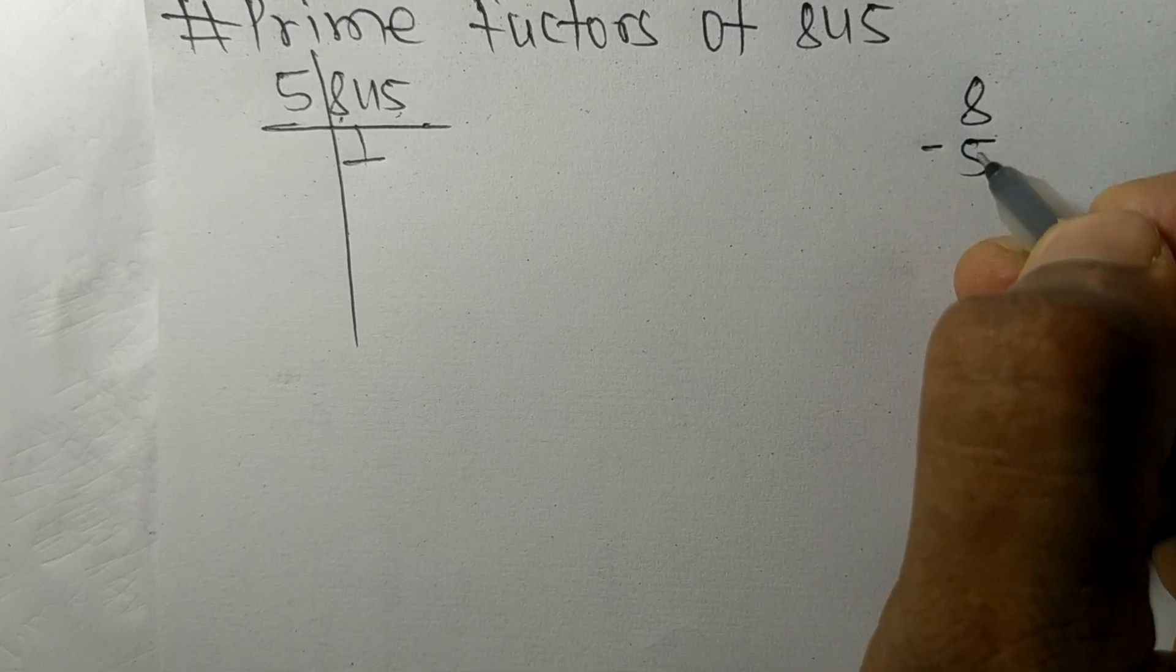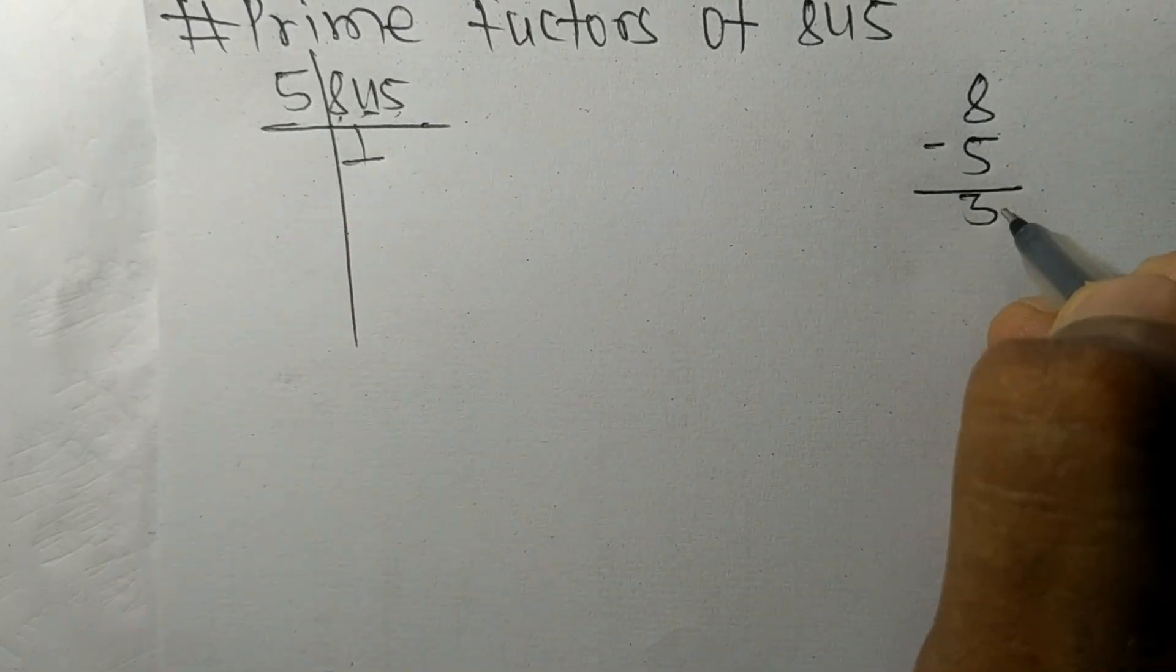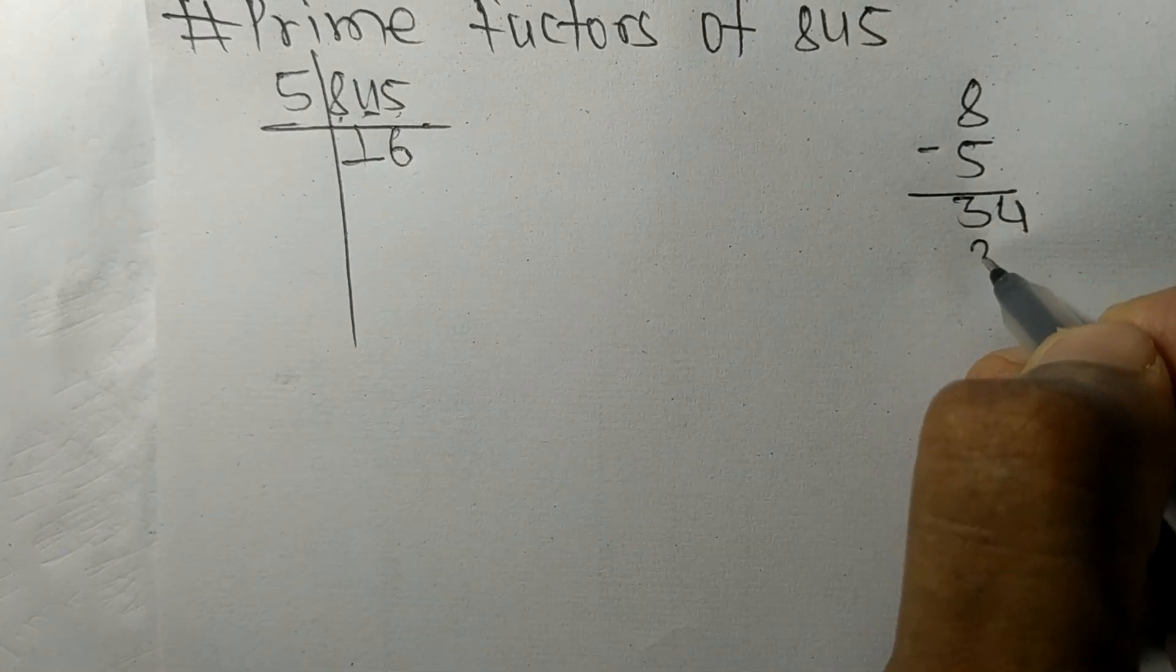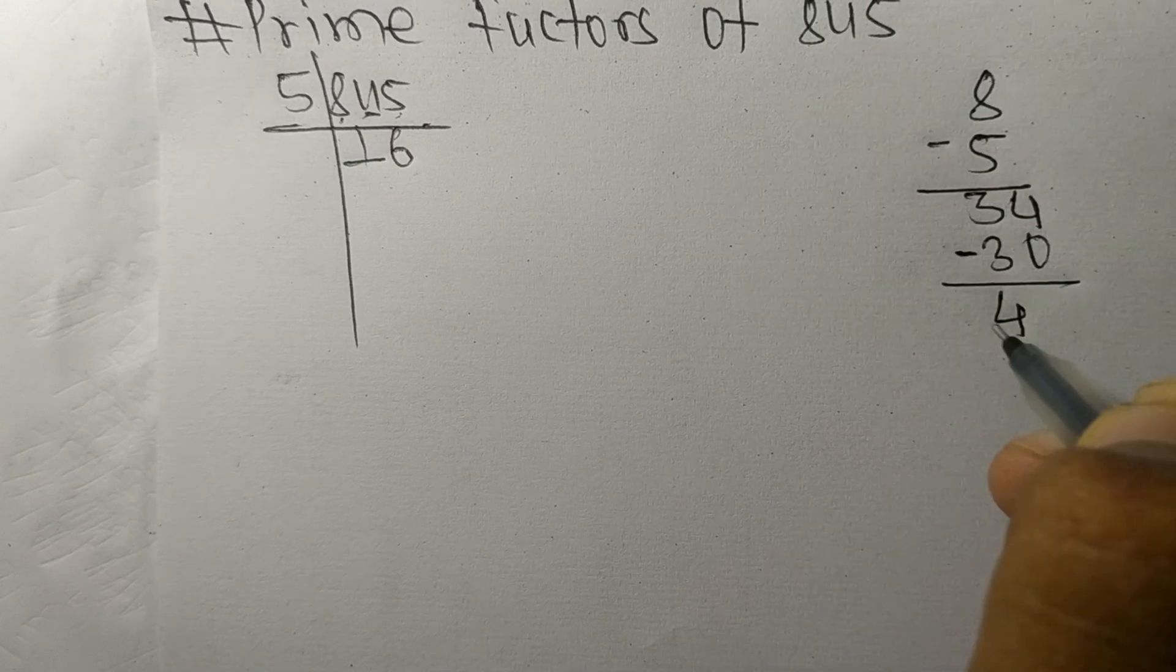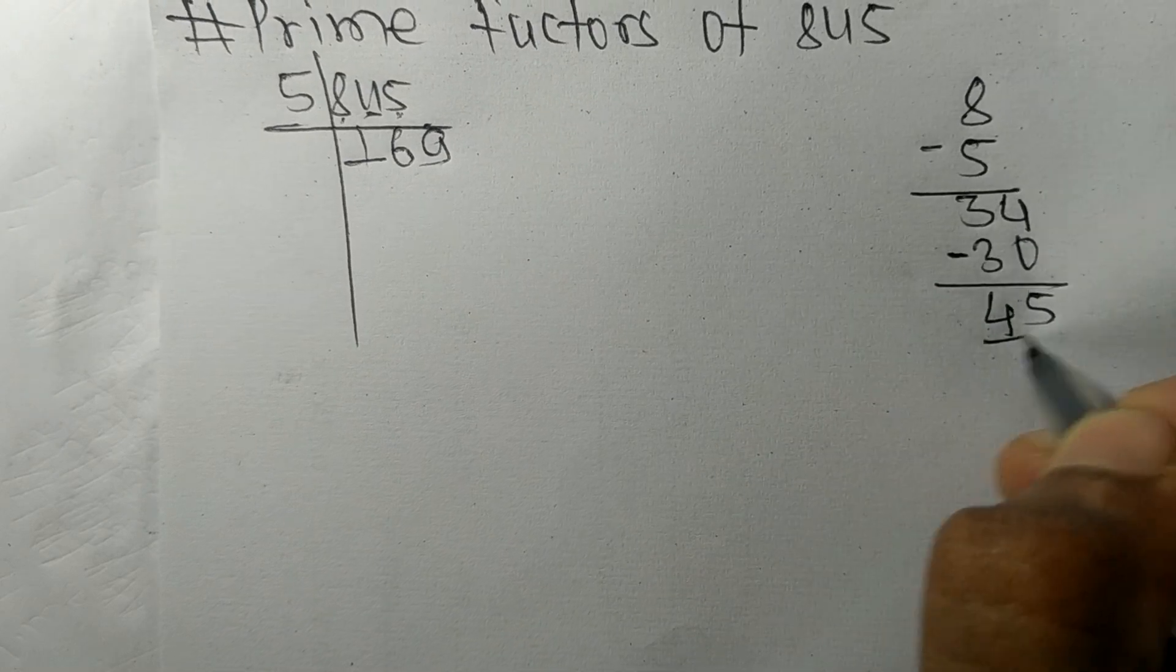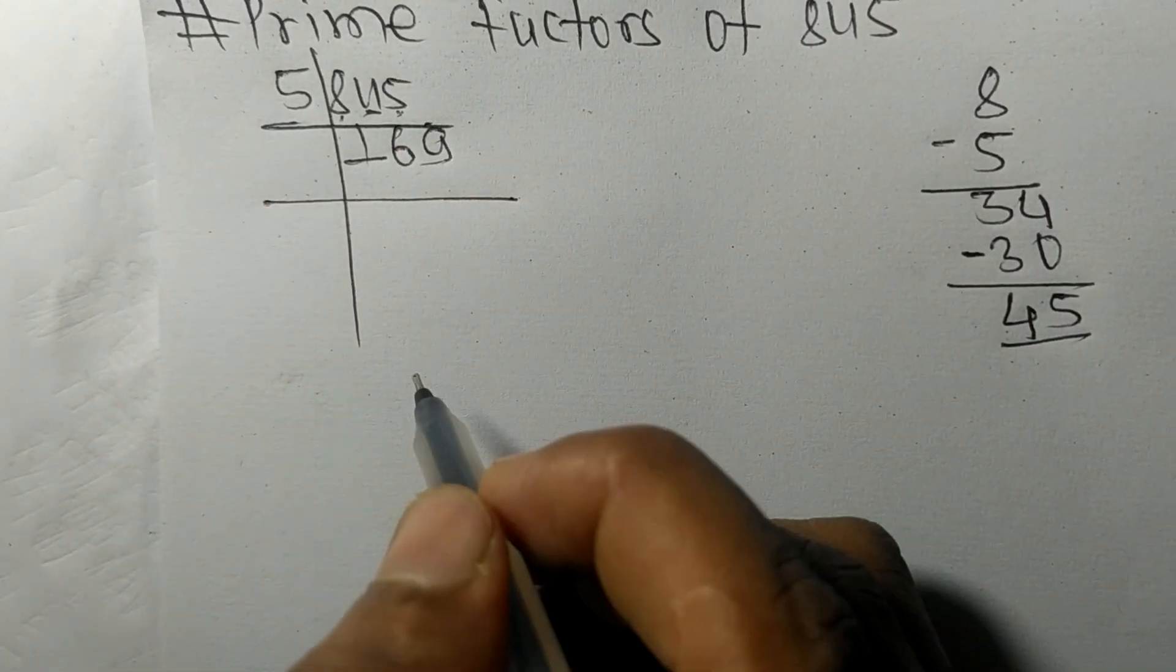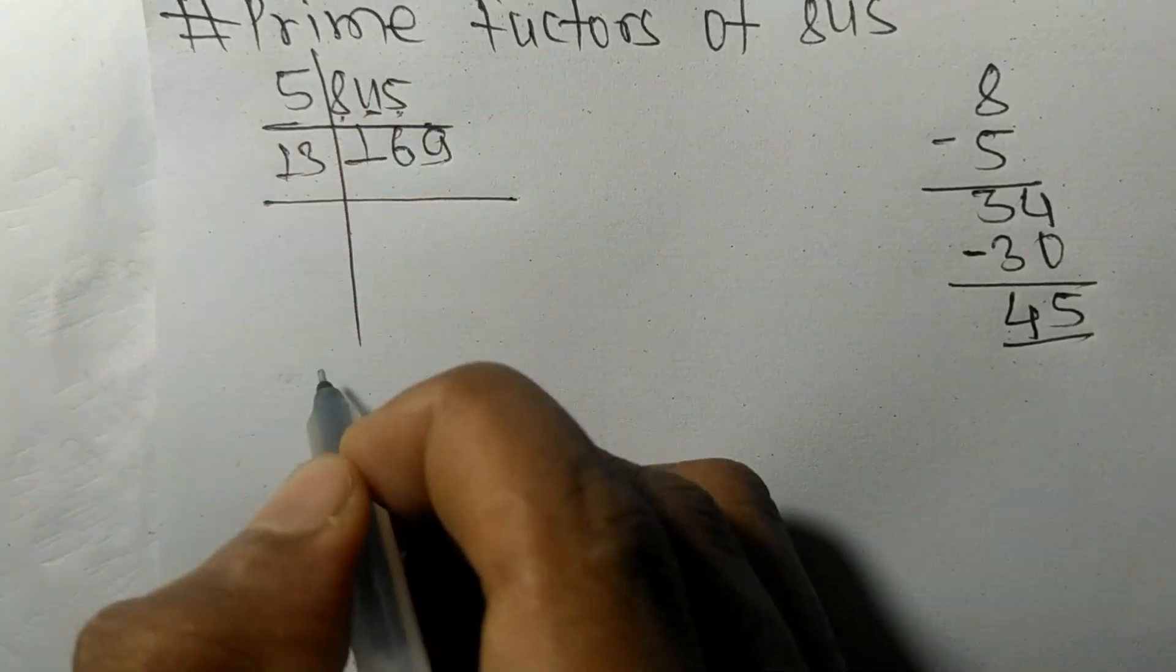On subtracting we get 3 and this 4, 34. So 5 times 6 means 30. On subtracting we get 4 and this 5, 45. 5 times 9 means 45. Now we got 169 which is exactly divisible by 13.